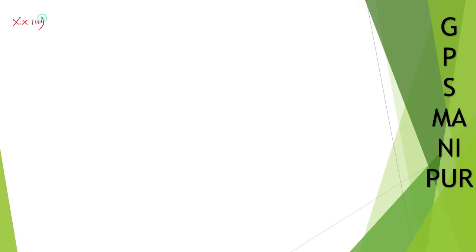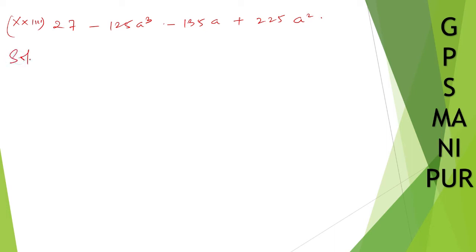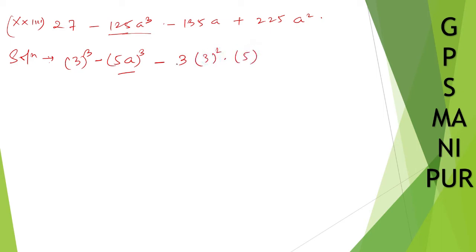The next equation is Roman number 23: 27 minus 125a cube minus 135a plus 225a square. Solution: 27 can be written as 3 cube, and 125a cube as (5a) whole cube. We can verify: 3×3 is 9, 9×3 is 27, 27×5 is 135 — so the coefficient 135 checks out.